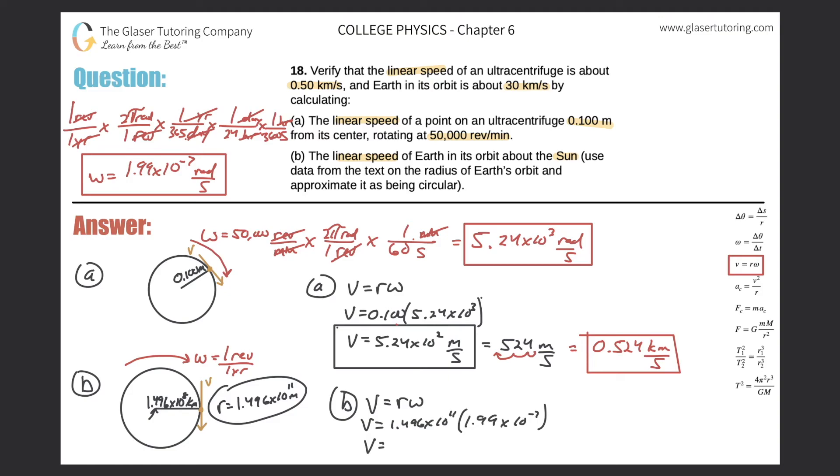So we get 1.496 times 10 to the 11th multiplied by 1.99 times 10 to the negative 7th. And here we get a value of 29,800 meters per second. That's the answer in meters per second.